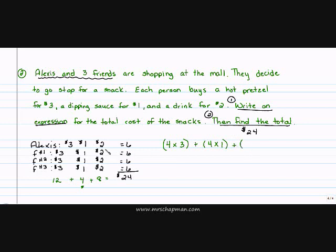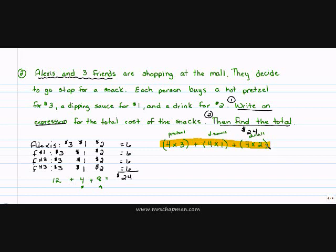Plus I had four friends that bought a drink — four friends times a drink at two dollars, and four times two gives me eight. I put these in parentheses for the pretzel, the dipping sauce, and the drink. I'm going to multiply each one by four. The order of operations comes in here because you want to solve how much they're spending on a pretzel, how much on a dipping sauce, and how much on a drink.